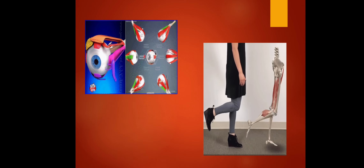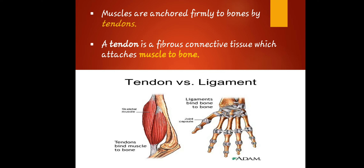Muscles are anchored firmly to bones by tendons. A tendon is a cord of strong, flexible tissue — similar to a rope — that connects your muscles to your bones. Tendons allow us to move our limbs, and you can find tendons from your head all the way down to your toes. A tendon is a fibrous connective tissue which attaches muscles to bone.